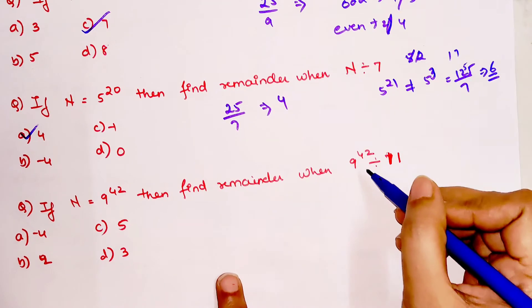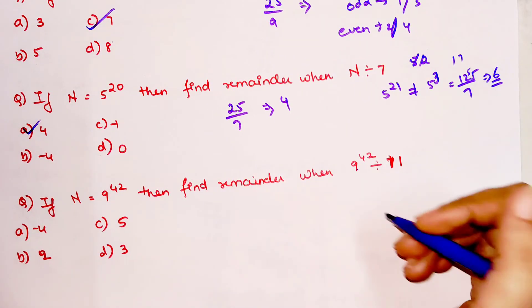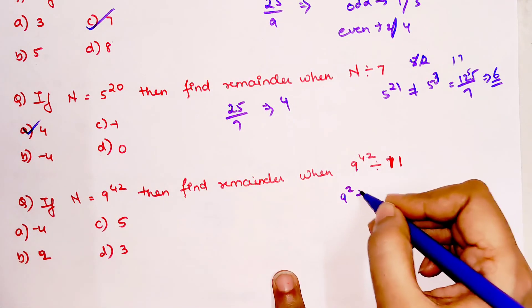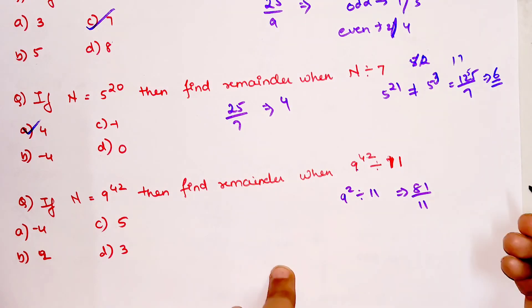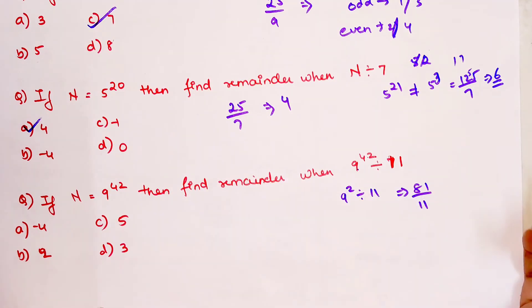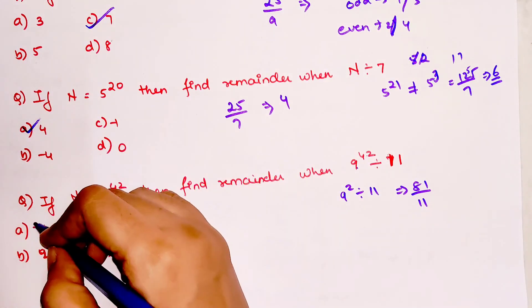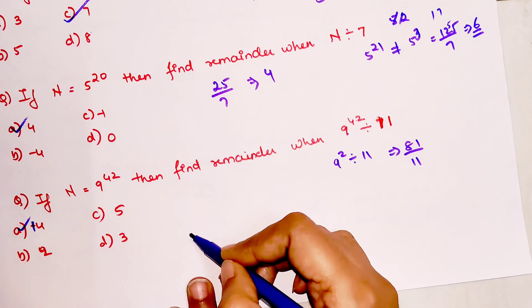So now for here we have 9 raised to 42. 9 raised to 42 is again even power, so 9 squared divided by 11. So we have 81 divided by 11. So your answer will be plus 4. So option B is your correct answer. So now time for your DIY.